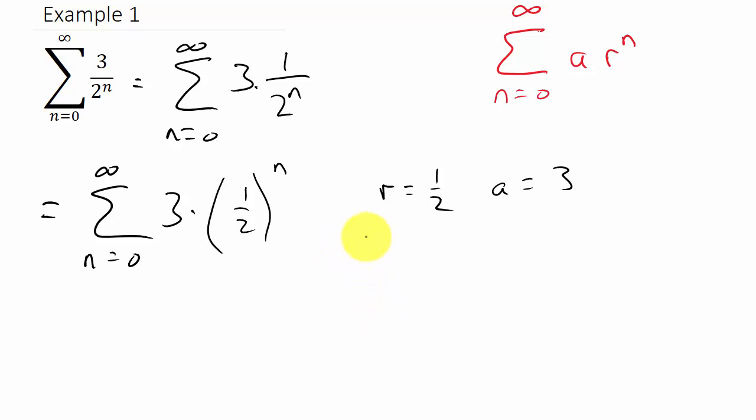So we can see here R is one half, so that means that the absolute value of R is between zero and one. So that means that this series here converges.